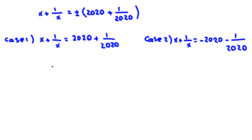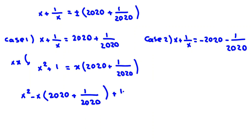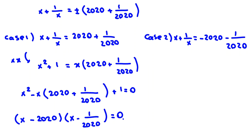In Case 1, we multiply by x: x squared plus 1 equals x times 2020 plus 1 over 2020. Taking everything to one side: x squared minus x times 2020 plus 1 over 2020, plus 1 equals 0. If we factorize, it will be x minus 2020 times x minus 1 over 2020 equals 0, because negative 2020 x here and negative 1 over 2020 x here multiply to give positive 1.